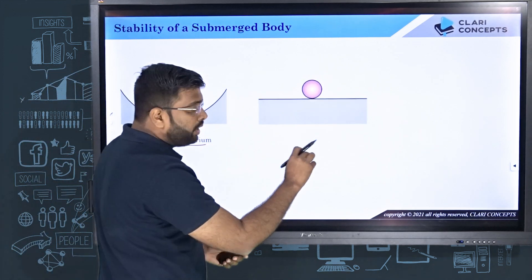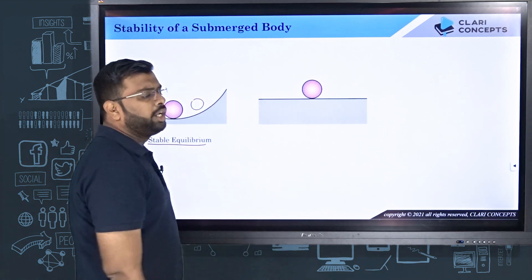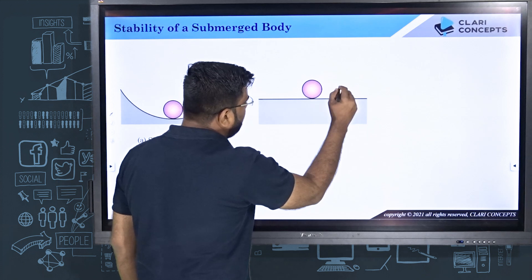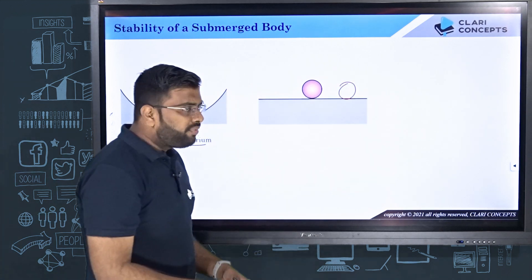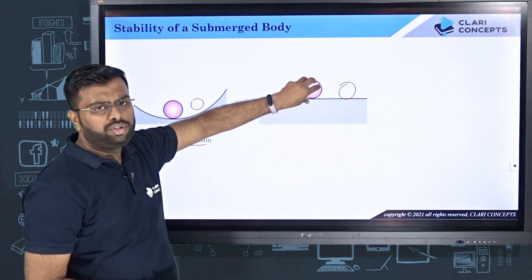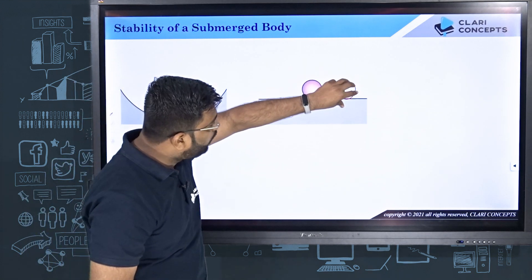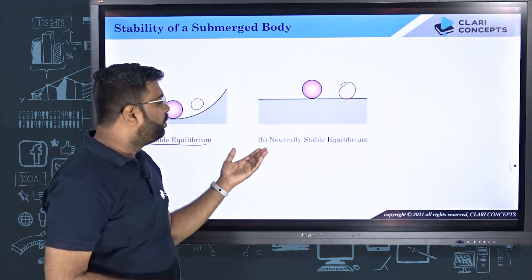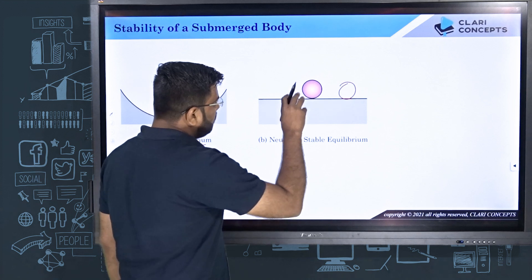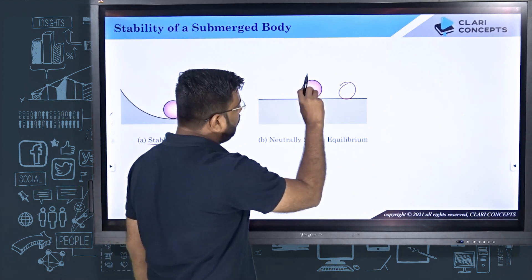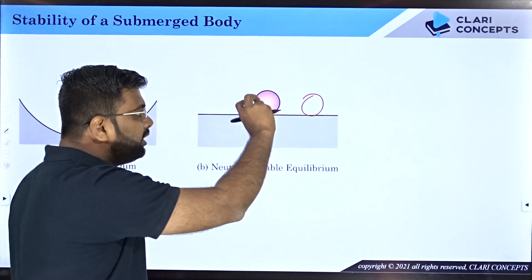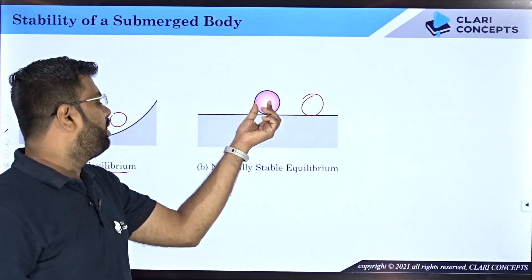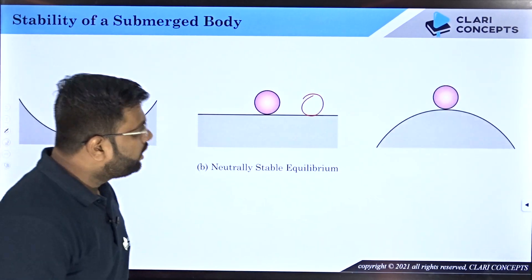On the other hand, consider a flat surface where the ball is in an equilibrium position at rest. If I disturb the ball and change its position, the ball neither returns to its original position nor deviates further. This equilibrium is known as neutrally stable equilibrium — the body neither returns back nor deviates further after a disturbance.